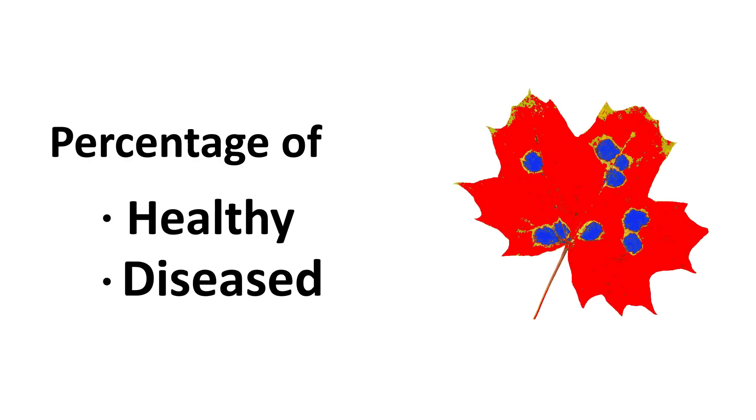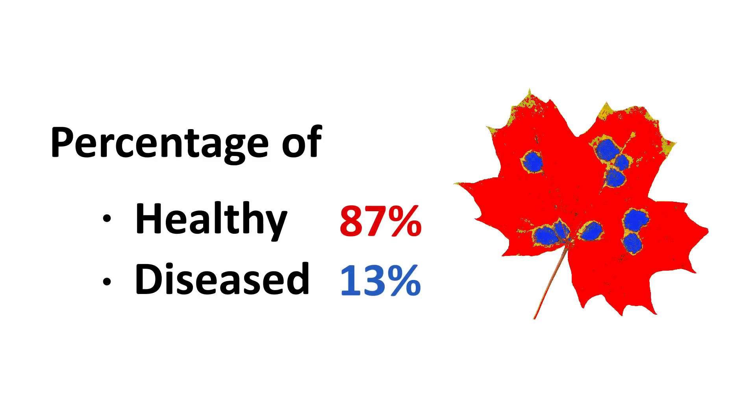In addition, WindiAS can measure the percentage of healthy and diseased leaf area using a simple point-and-click method. Let's see how this powerful analysis feature works.